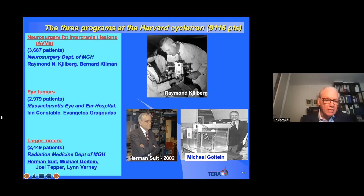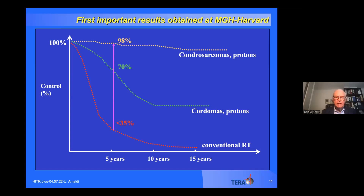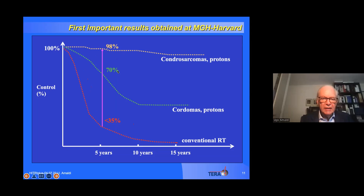I want to underline the importance of the contributions of Herman Suit and Michael Goitein, who guided the MGH/Harvard group as physician and medical physicist respectively. They treated large tumors — particularly in the brain — in 2,500 patients, an enormous feat that made the field's development possible. Their iconic result showed 98% and 30% long-term local control for chordosarcomas and chordomas respectively.